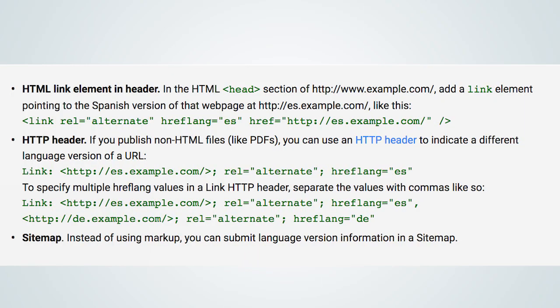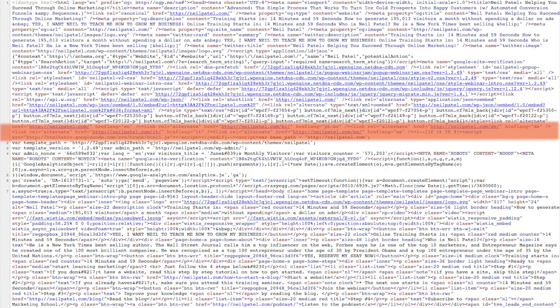After you translate your content, the second thing you want to do is use hreflang code. hreflang code is from Google — a lot of search engines use it. What hreflang does is it tells the search engines: this page here is my English version, and this other page is my Portuguese version for Brazil. If you look at the source code for neilpatel.com, you'll notice that I have an hreflang for German, Spanish, and Portuguese Brazil.